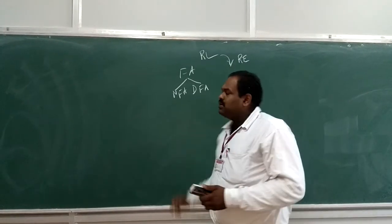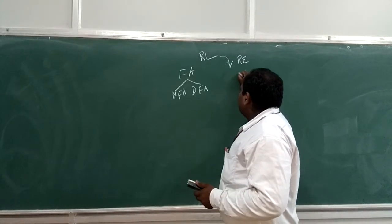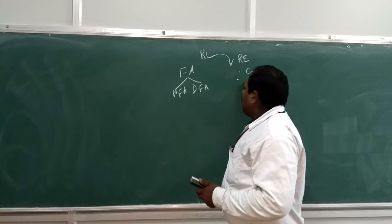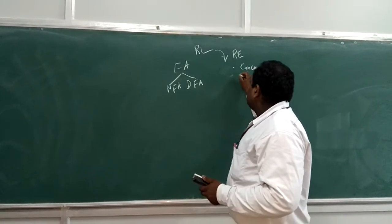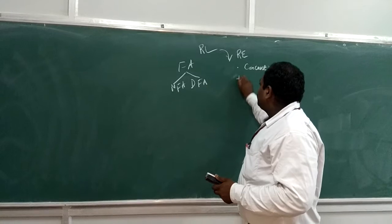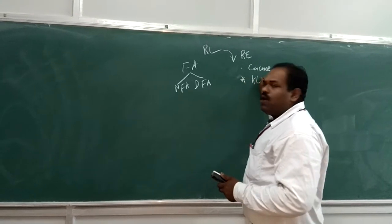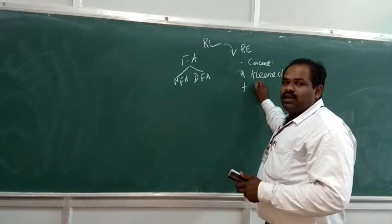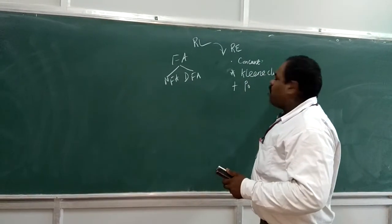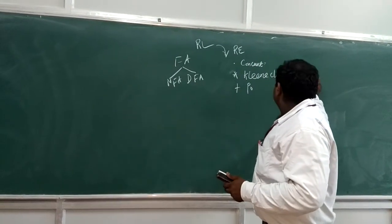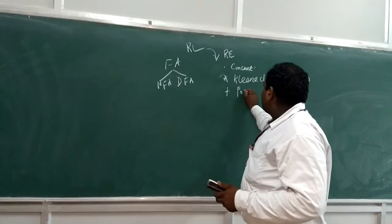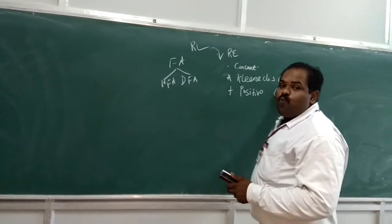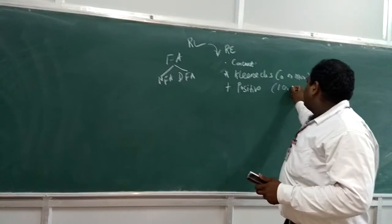Suppose there are four rules. One is the concatenation. Then second one is, we have the union operation. That means the Kleene closure operation. Kleene closure. Then positive closure. This is zero or more times of repetition. Zero or more times. This is positive closure. Positive closure may have the one or more times. One or more times.